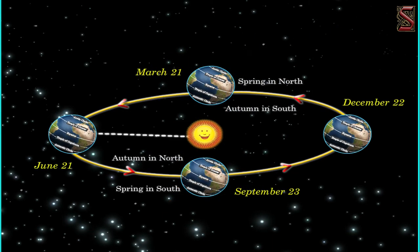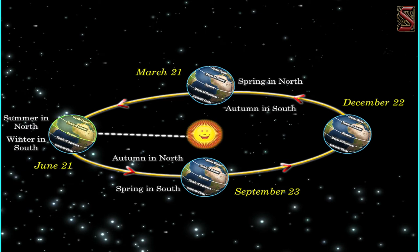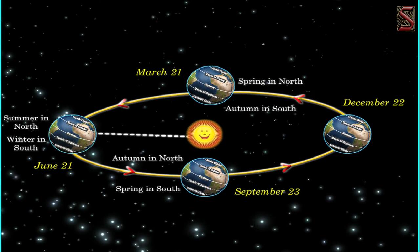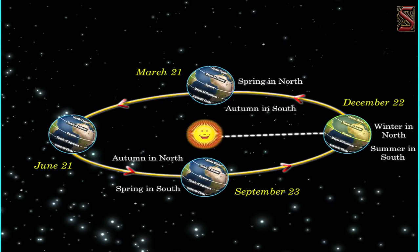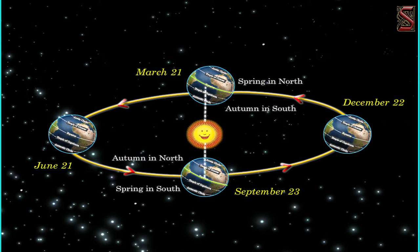While the northern hemisphere is tilted towards the sun during the months of June, the southern hemisphere is tilted away. This results in summer in the northern hemisphere while the southern hemisphere experiences winter. After six months, the northern hemisphere experiences winter while the southern hemisphere experiences summer. In months like March and September, when the equator is exposed to the sun directly, the northern and southern hemispheres receive a similar amount of energy from the sun.